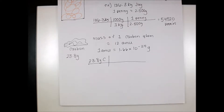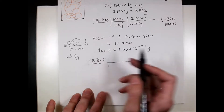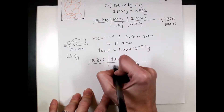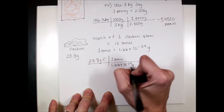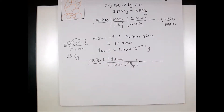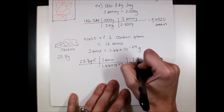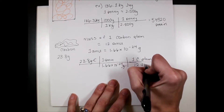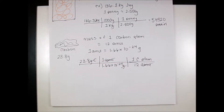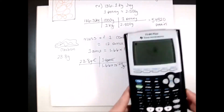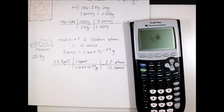First, we go from grams to atomic mass units using the conversion: 1 AMU equals 1.66 times 10 to the negative 24 grams — so grams cancels with grams. Now we know one carbon atom has a mass of 12 AMU, so that cancels too, and we're left with the number of carbon atoms. When dividing by exponents in your calculator, make sure you use parentheses.